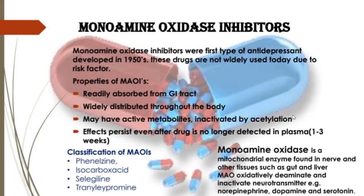Properties of monoamine oxidase inhibitors: they are readily absorbed from the GI tract, widely distributed throughout the body, may have active metabolites, inactivated by acetylation, and effects persist even when no longer detected in plasma for one to three weeks. Classification includes phenelzine, isocarboxazid, selegiline, and tranylcypromine.